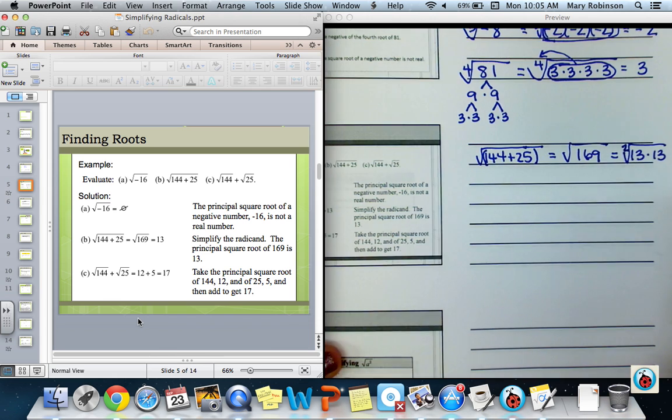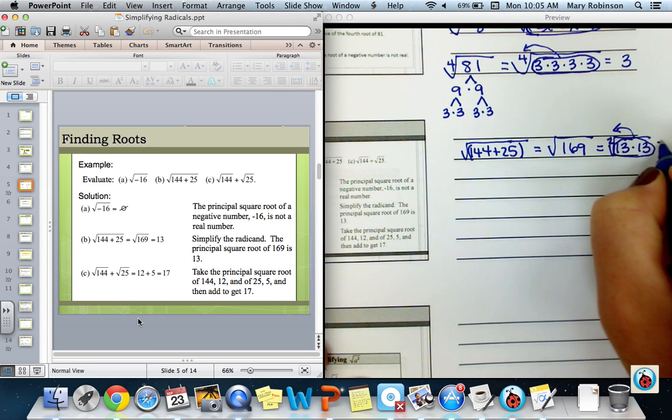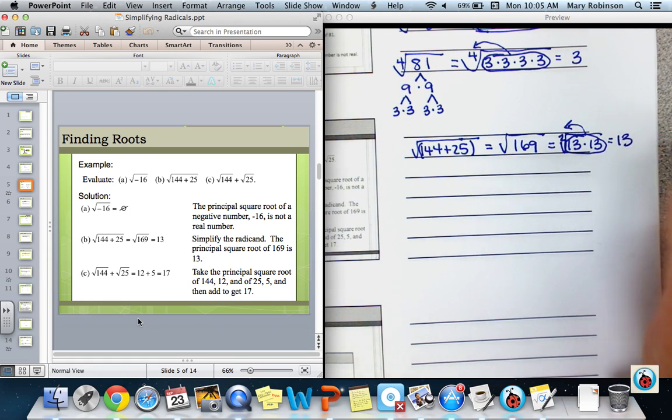With an understood index of 2, that means we're looking for 2 of the same factor, and we'll pull that out. So we have one group of 13s. So our answer is just 13.